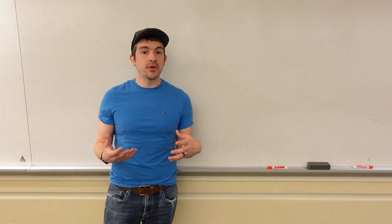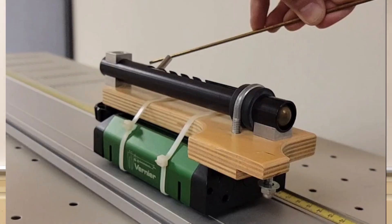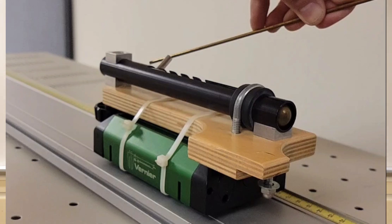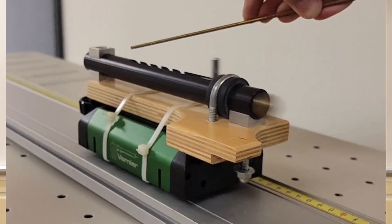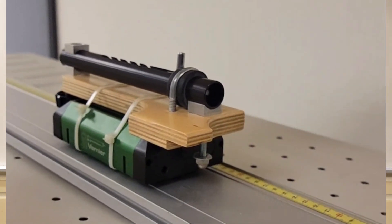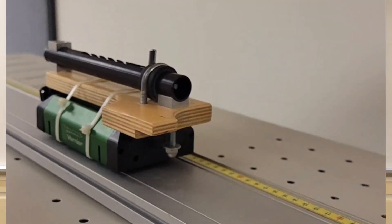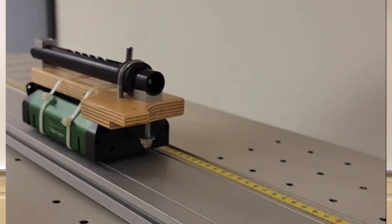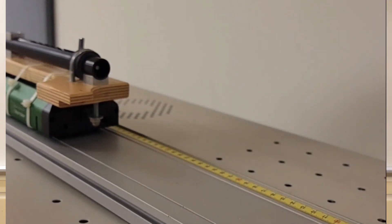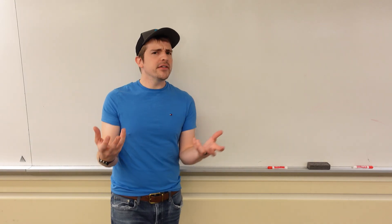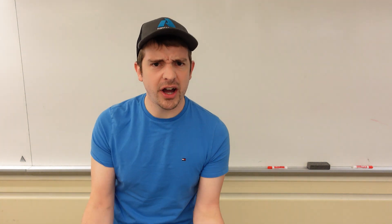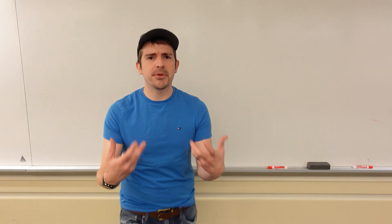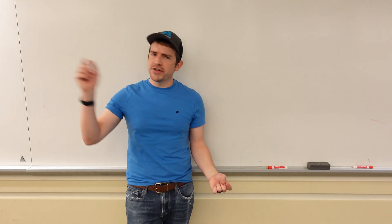There's a nice little demonstration we can look at right here. We have this cart with a spring gun on it. I launch the spring gun, and you can see the ball is going one way while the cart goes the other. The cart would be the rocket in that situation, and the ball would be the fuel.